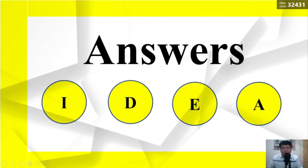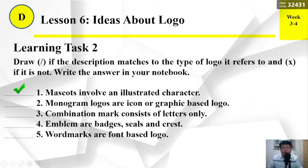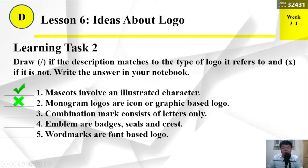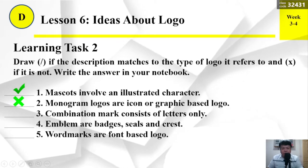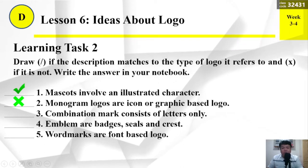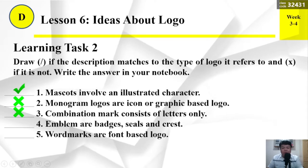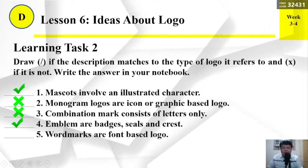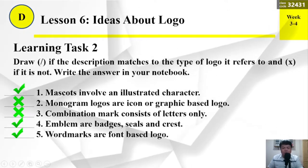Here are the answers. Number 1: Mascots involve an illustrated character — Check. Number 2: Monogram logos are icon or graphic-based logos. Number 3: Combination mark consists of letters only. Number 4: Emblems are badges, seals, and crests — Check. Number 5: Word marks are font-based logos — Check.